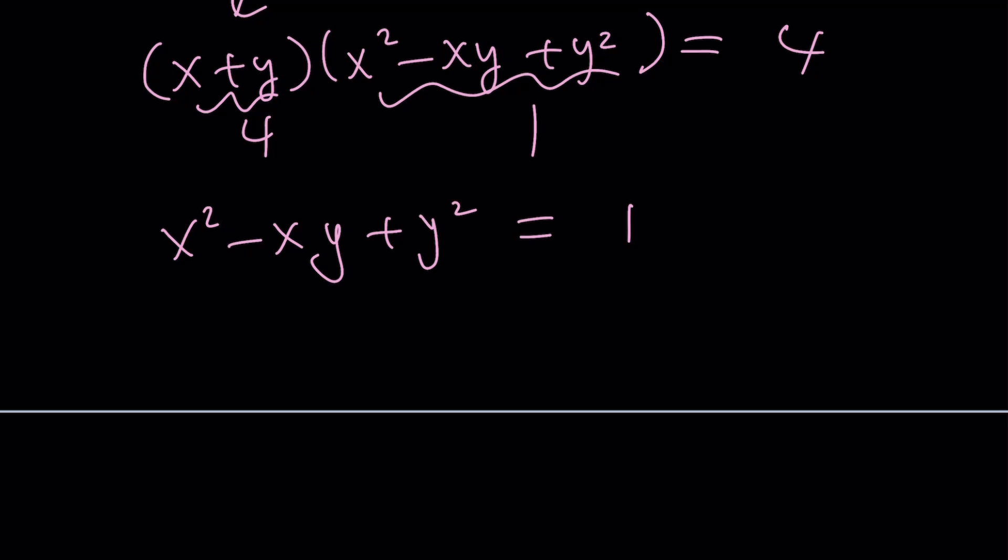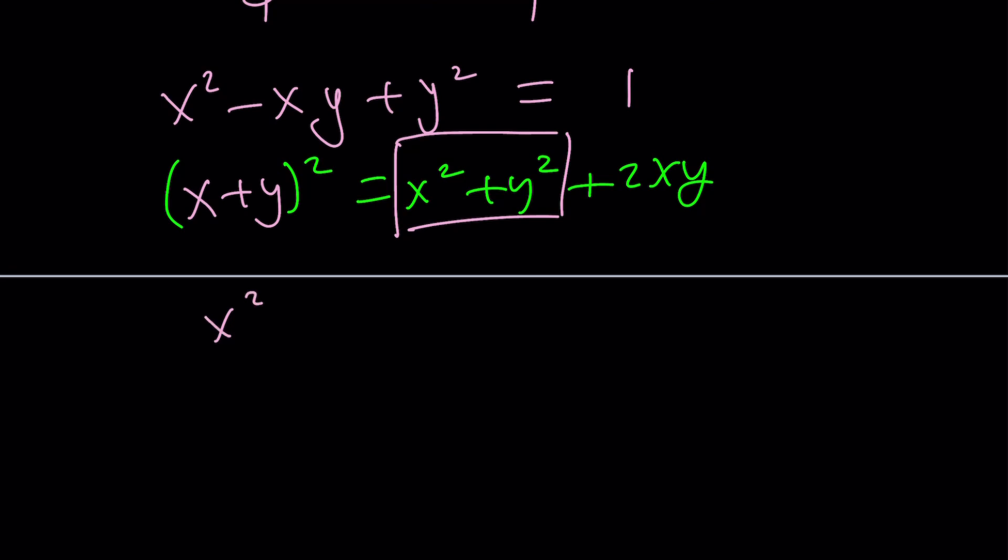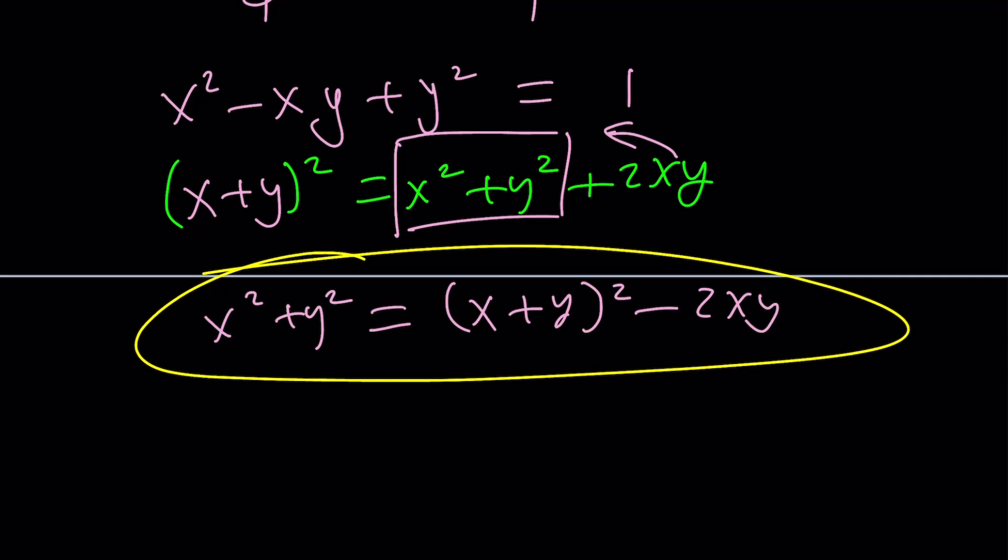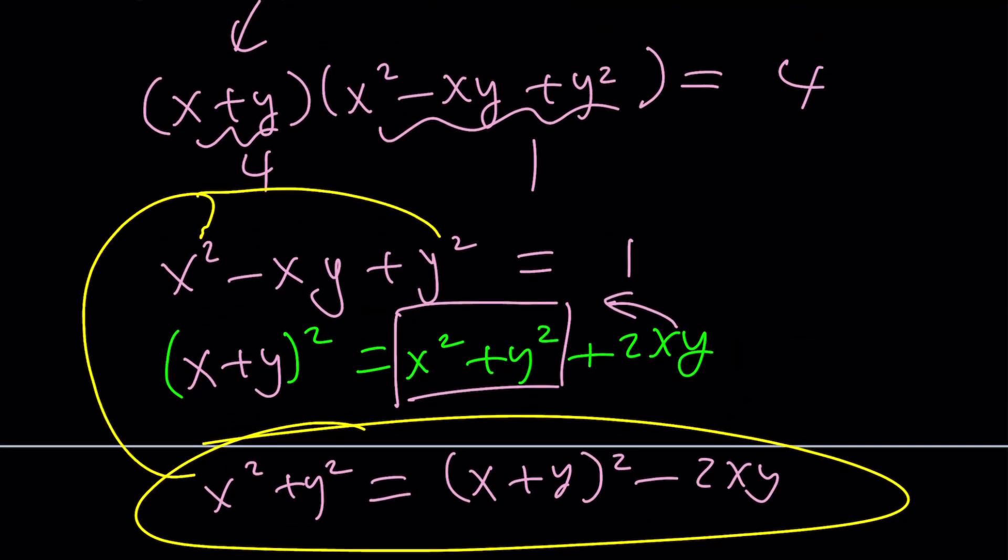But guess what? x squared plus y squared and x plus y are related. So you can actually square x plus y. And when you do, you get x squared plus y squared plus 2xy. I like to write that at the end. So from here, you can isolate this by subtraction. So x squared plus y squared from here becomes x plus y squared minus 2xy by way of subtraction. And then you can substitute that here.